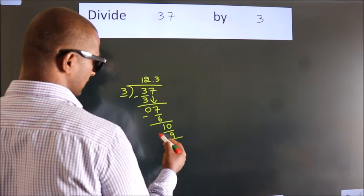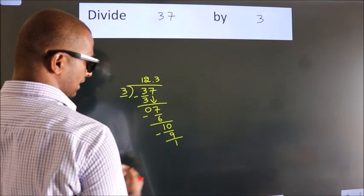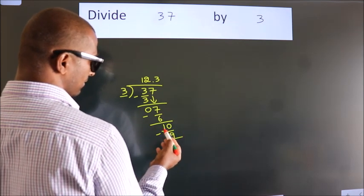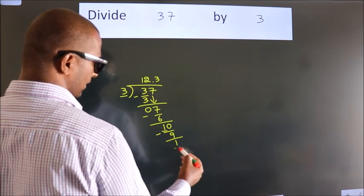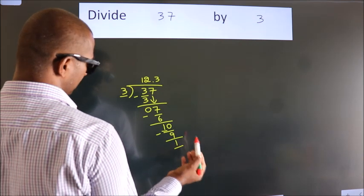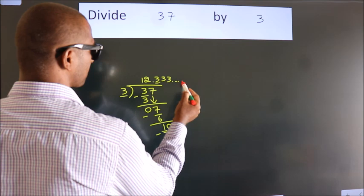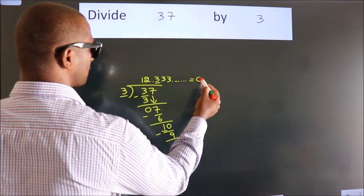Now, we subtract, we get 1. Now, you observe, we had 1 here and we got 1 again. That means, this number keep on repeating. So, this is our quotient.